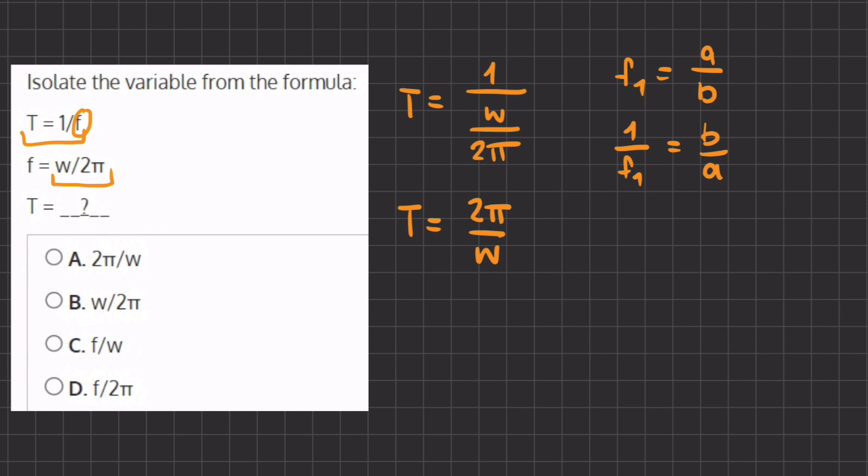And so 2 pi divided by w corresponds to answer A, and therefore will be our final answer.